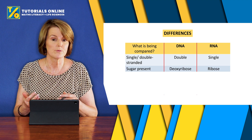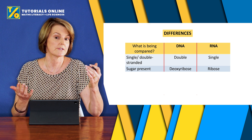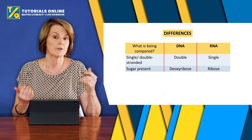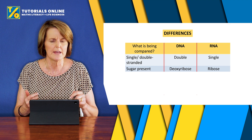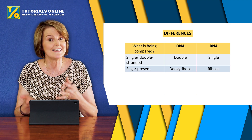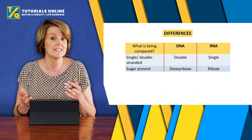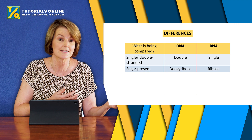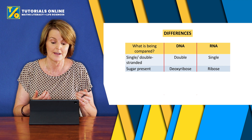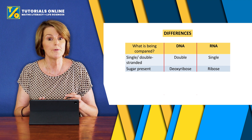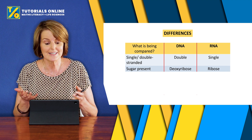The next difference is the sugar present. They both have sugars, as we mentioned in the similarities, but what sugars do they have? DNA has deoxyribose — that's where it gets its name, deoxyribonucleic acid — and RNA has ribose, so that is a difference.